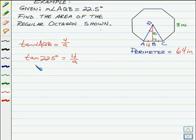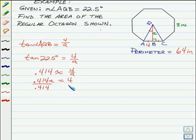So we figure out the tangent of 22.5. It's approximately 0.414. So that's approximately going to be 4 over A. If we multiply both sides by A, we'll get 0.414A equals 4. And then divide both sides by 0.414. And we'll get A is approximately equal to, let's round that off to 9.7.